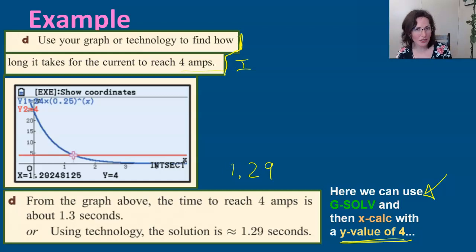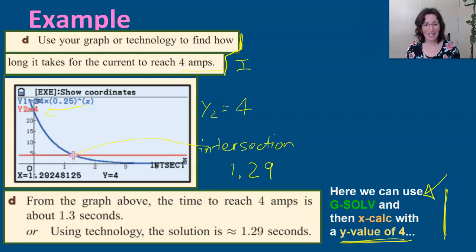I just want to remind you of all the other options that you've got to solve a question like this. This particular graph has Y2 = 4, so that's the whole straight line at 4, and then it finds the intersection point of those two graphs. As you can see, Y is 4, so 4 amps after 1.29 seconds.